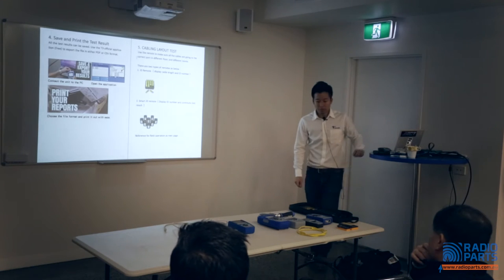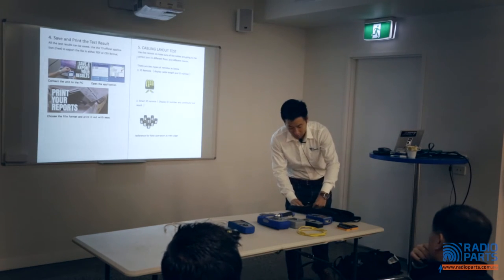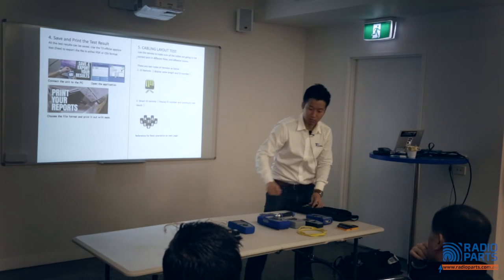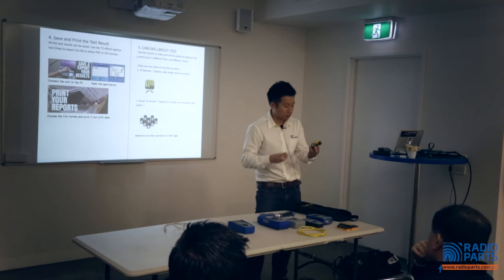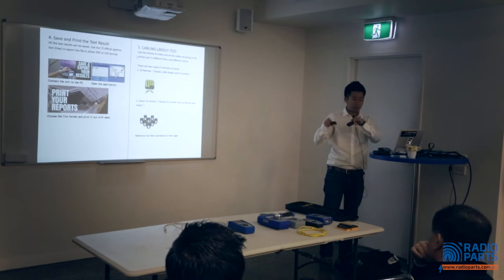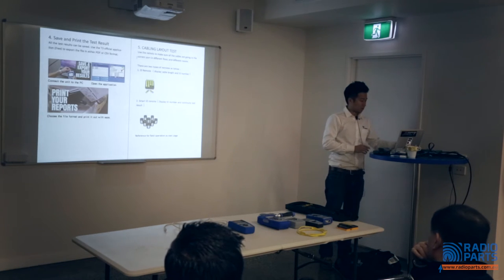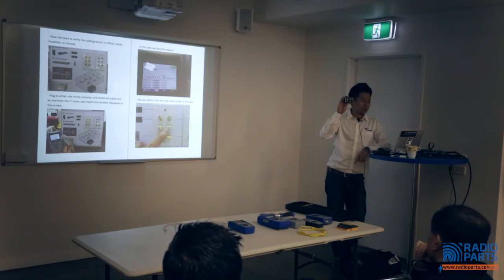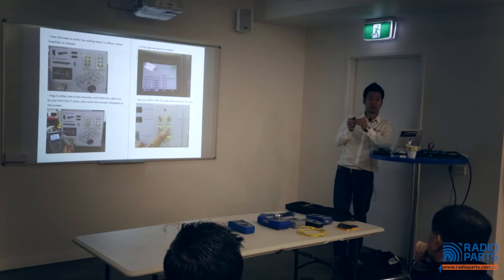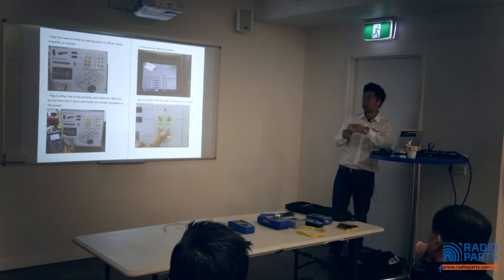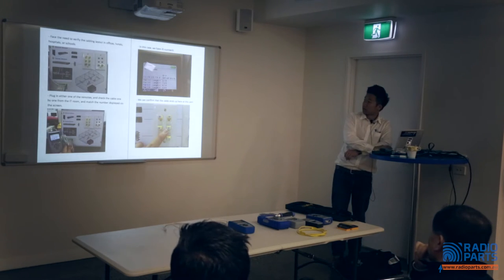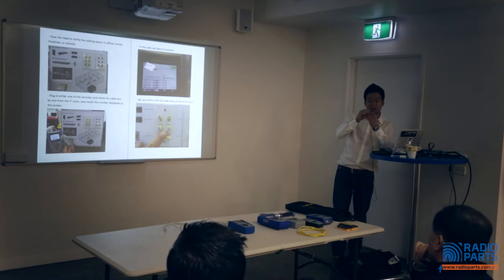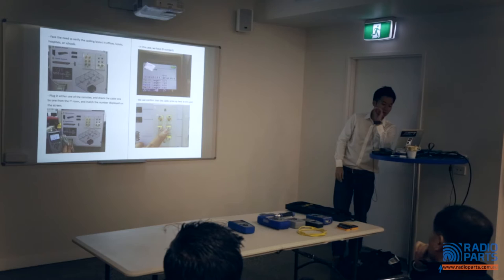Now I'll go through some accessories that come with the testing device. There are two different types of remotes you can get in the T3 kit. The first is what we call the ID remote. It helps you identify the layout of the cable inside a customer's house — for example, when you go to a new job and don't know how the cables run. You can see there are multiple ports here, and you plug them in with different numbers.